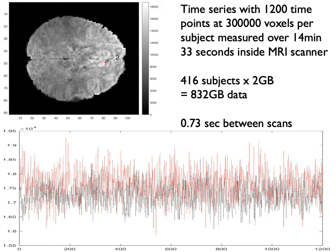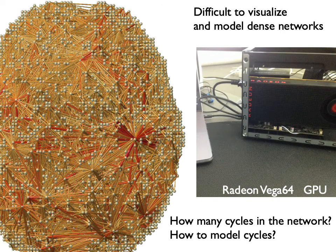The resting state fMRI used in our studies was scanned at the two millimeter resolution over 14 minutes, giving us 0.73 seconds between scans and a total of 1,200 time points. This is a huge dataset with more than 400 subjects, at two gigabytes per subject — about 800 gigabytes total. For a network with 300,000 nodes, it is very difficult to compute anything, for example how many cycles are in the network.